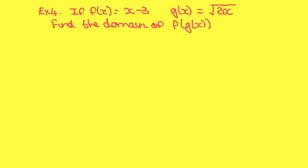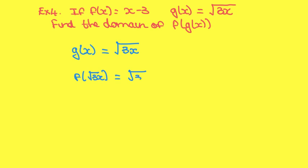Example 4. If f of x equals x minus 3 and g of x equals the square root of 3x, find the domain of f of g of x. First find g of x, so g of x equals the square root of 3x. Now do f of the square root of 3x, which equals the square root of 3x minus 3.